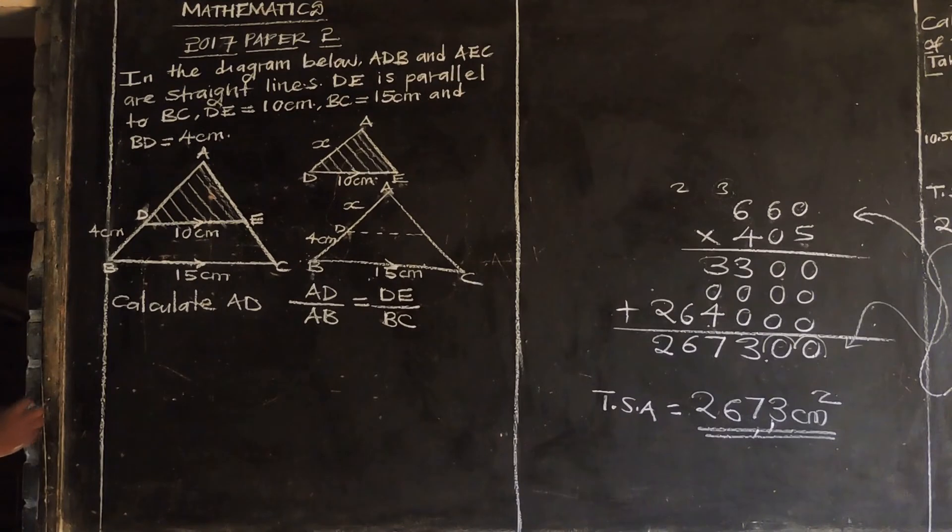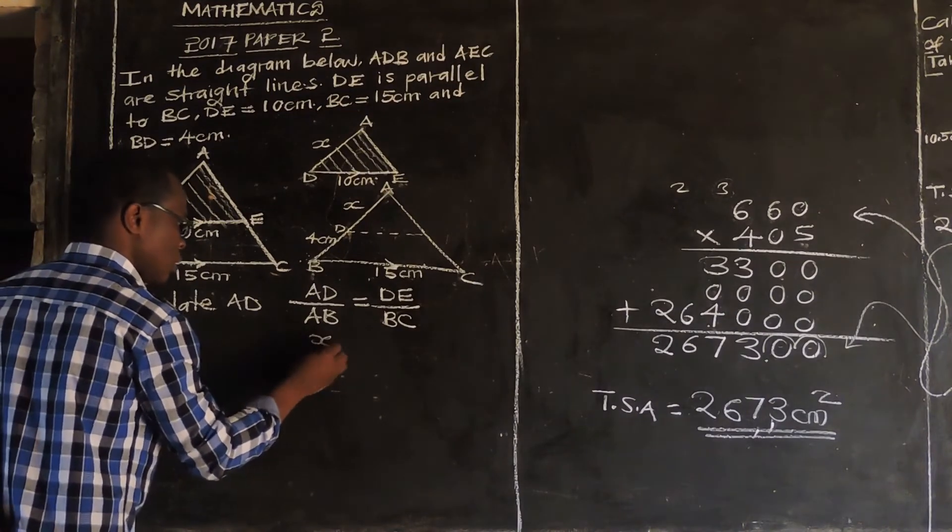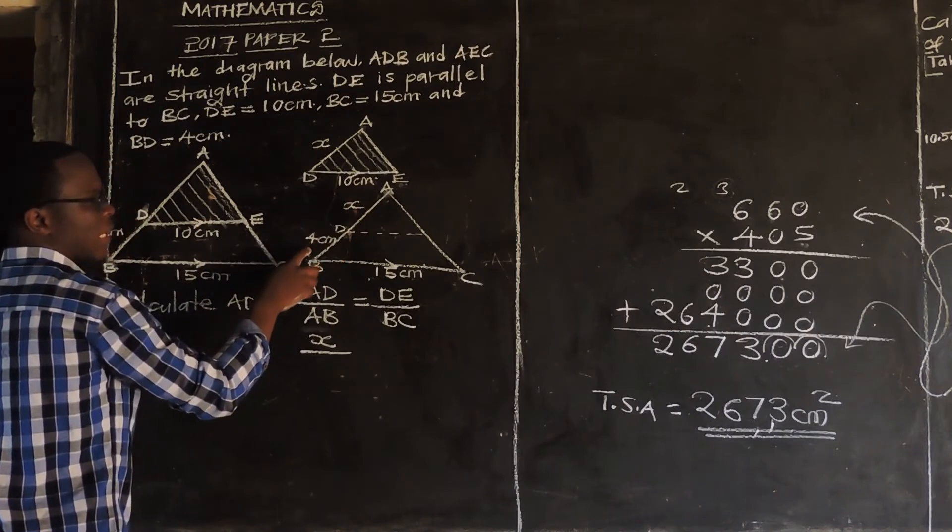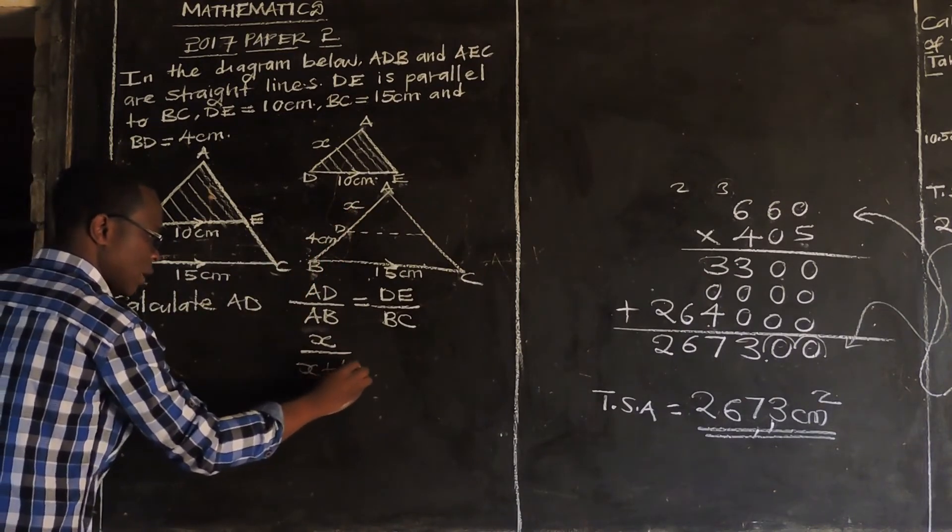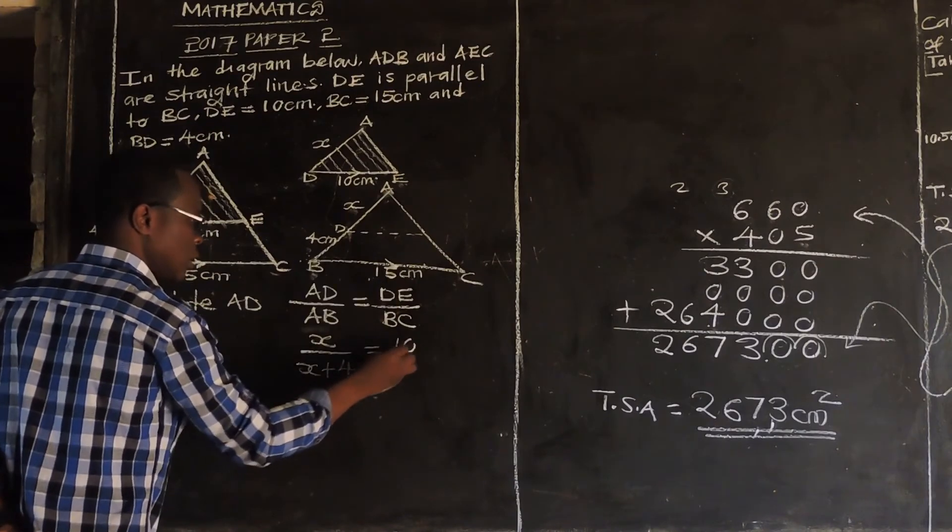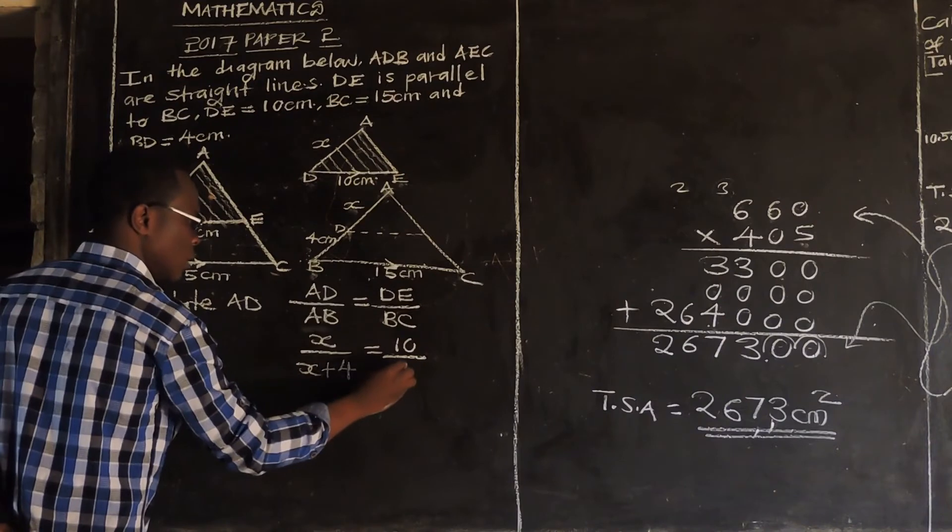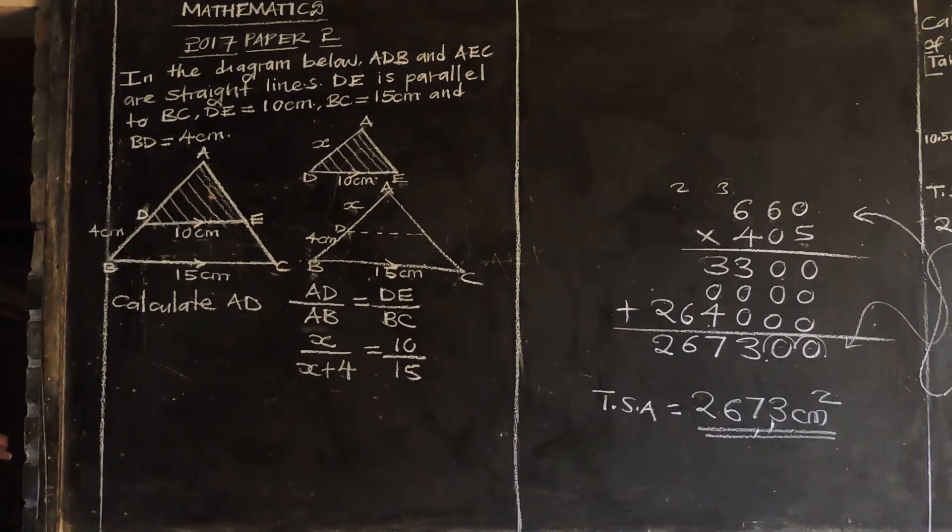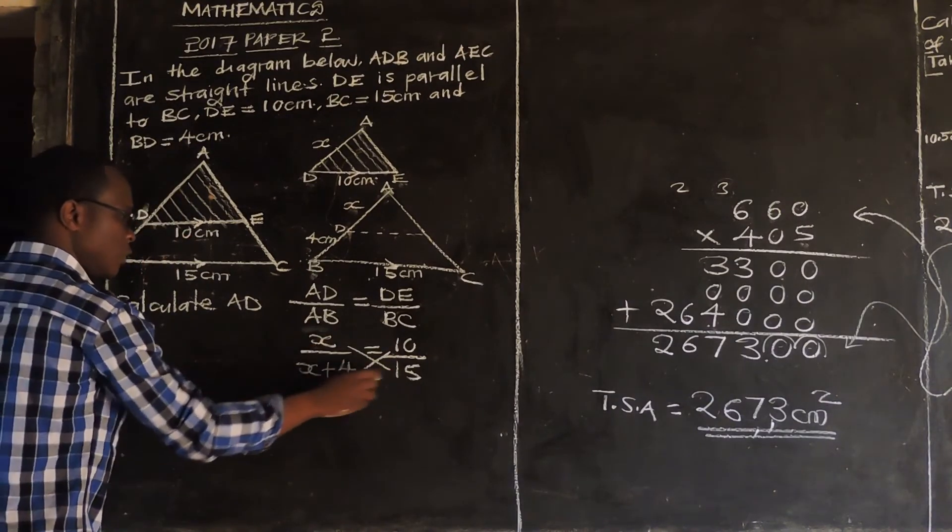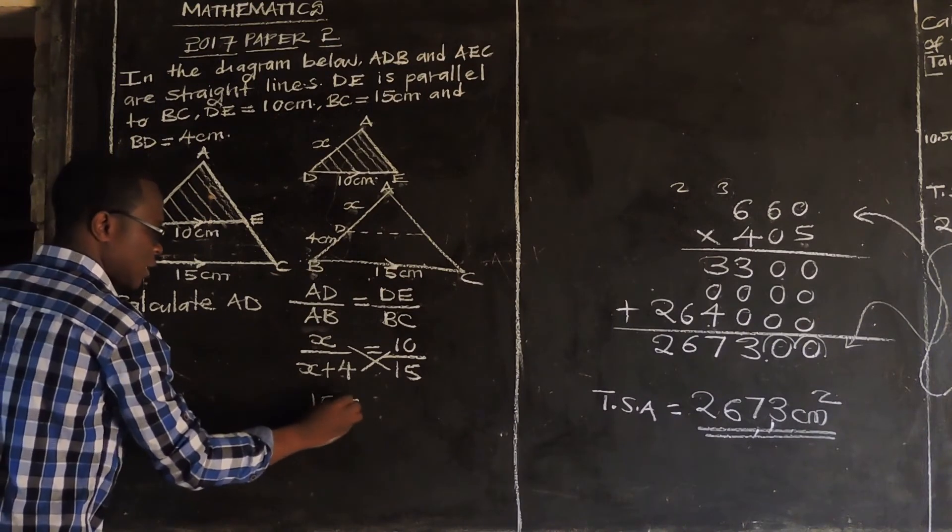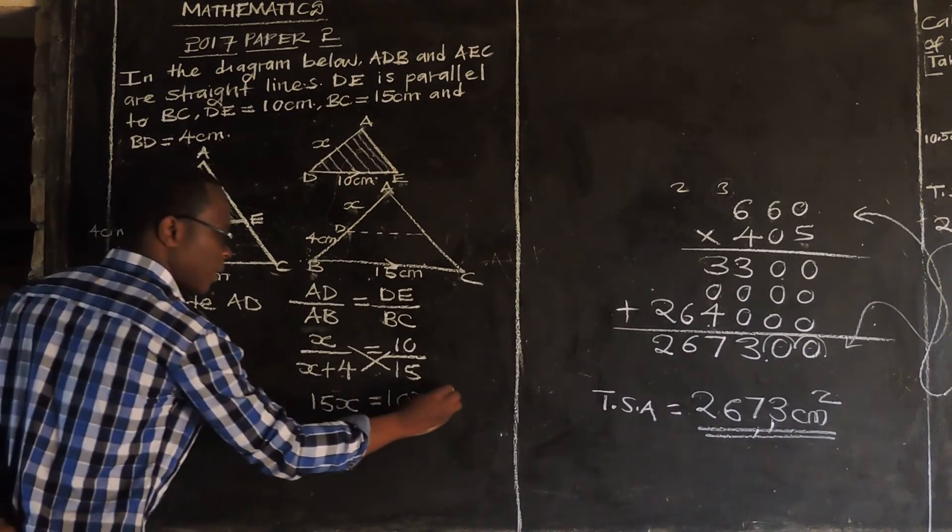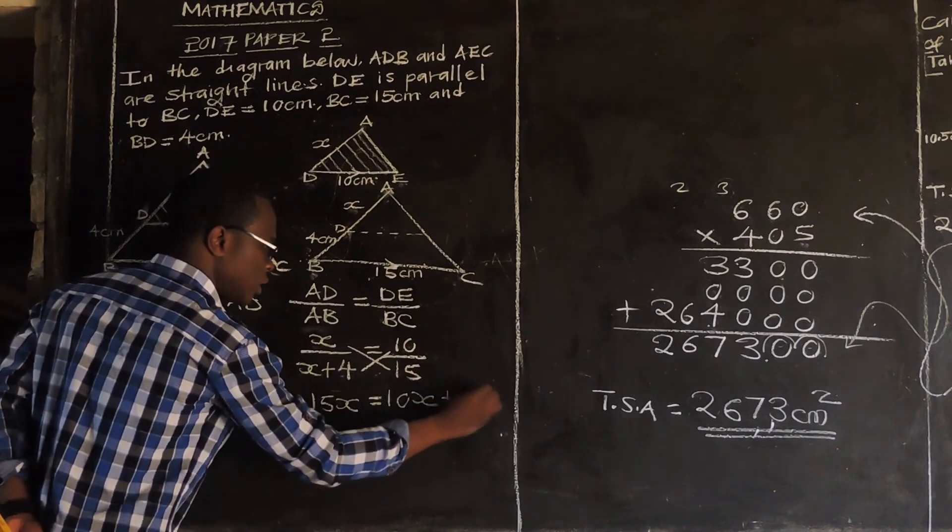Then you substitute in this case. AD, what is our AD? Our AD we don't know. This is X. Over, what is our AB? AB from A to B. This is X and this is 4. So just add X plus 4. X plus 4. This is X plus this 4. Is equal to what is our DE? DE is 10. So it's 10 divide by what is our BC? From B to C it's 15. So write 15. Then at this level just cross multiply. You multiply X by 15 and 10 by X plus 4. So X times 15 you get 15X is equal to 10 times X you get 10X, then plus 10 times 4 you get 40.